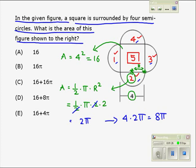And the answer we got here was sixteen. So now we add sixteen with eight pi to get our answer. Letter D is the right answer. Thank you.